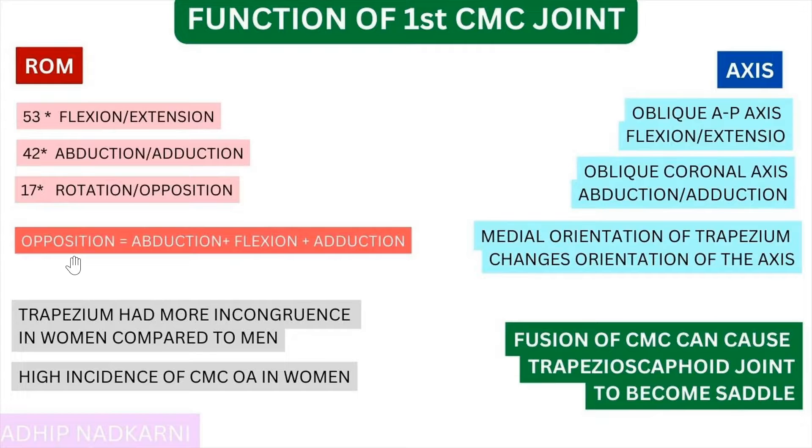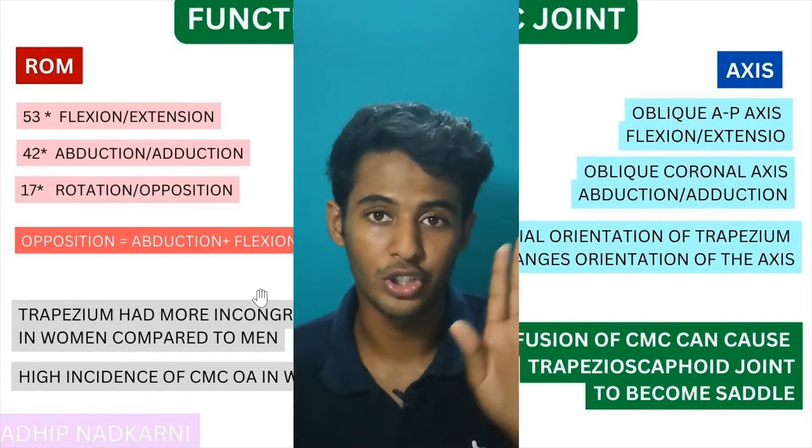As mentioned, opposition involves a combination of abduction, flexion, and adduction. This is how the opposition movement looks — abduction, then flexion, then adduction — and that covers the function of the first CMC joint.